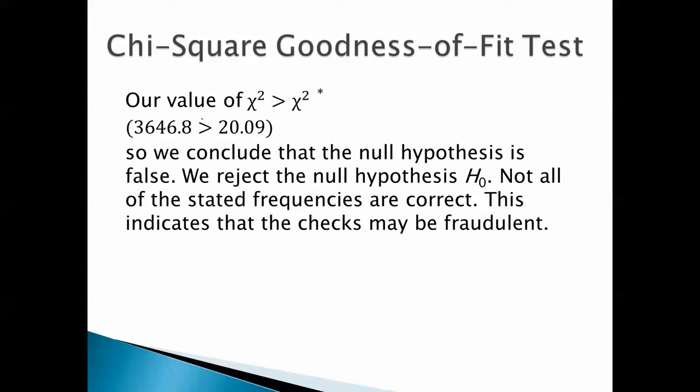Our value of chi-square is a lot bigger than the critical value. So we conclude that the null hypothesis is false. We reject the null hypothesis. Not all the stated frequencies are correct. This indicates that the checks may be fraudulent.